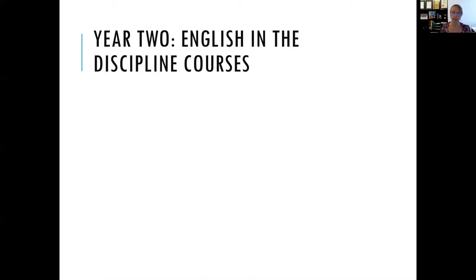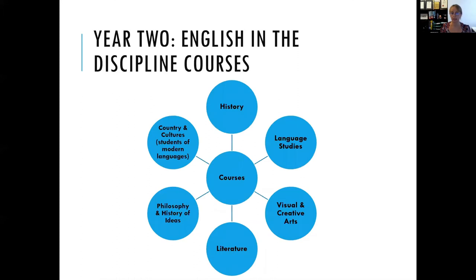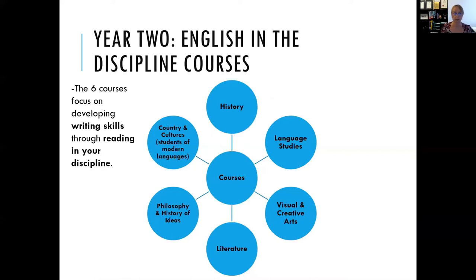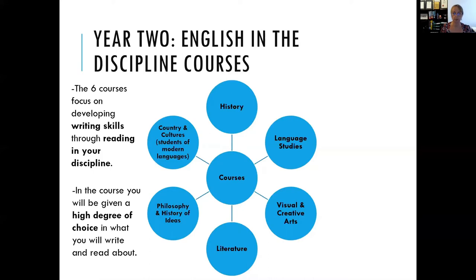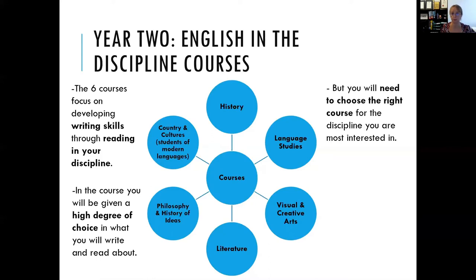In year two you'll take an English in the Discipline course. There are six of these courses and they relate to the majors in the Faculty of Arts. In these courses you'll be developing writing skills through reading in your discipline, and you'll be given a high degree of choice in what you read and write about. We hope you'll choose something of real interest to you, but you'll need to make sure you choose the right course for the discipline you're most interested in.